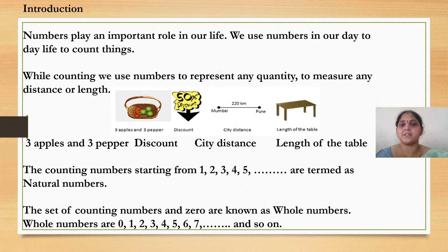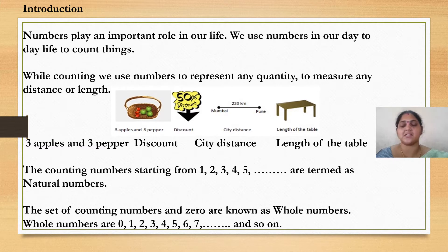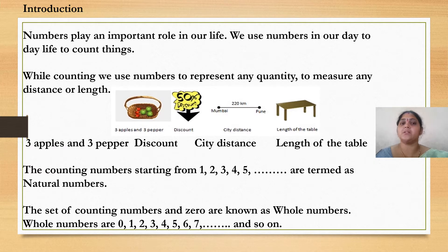For example, the picture what I have taken — if you observe, here you can see 4 different types of pictures. In that, you will be seeing the basket of fruits, next the discount sale, next one is the distance between 2 places, and the last is the table. When you observe the first picture, you are going to identify the fruits. How you are going to count the fruits — you will be counting that there are 3 apples and 3 pears in the basket.